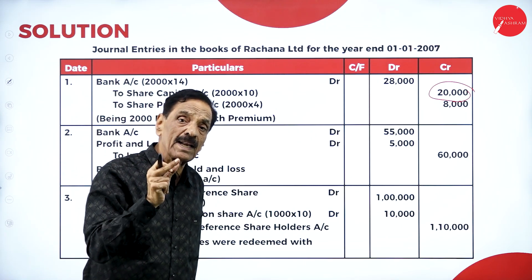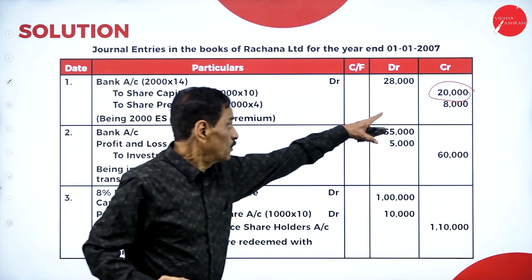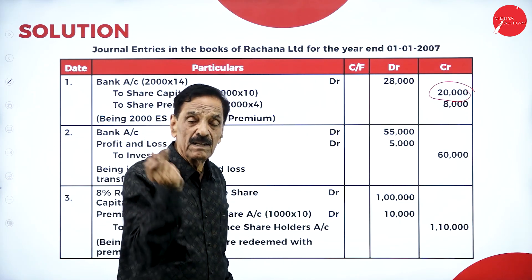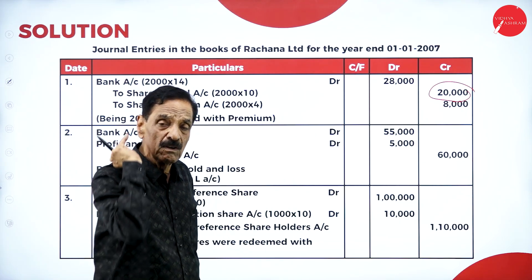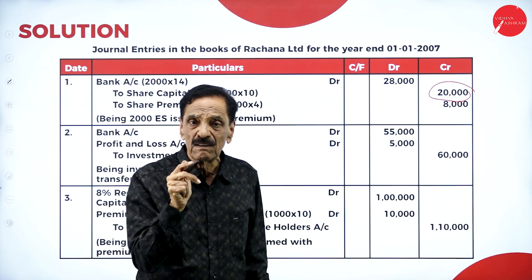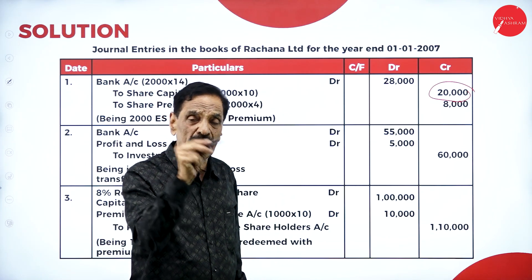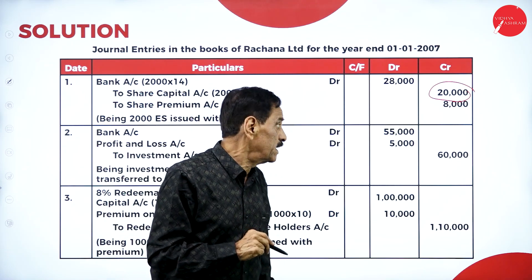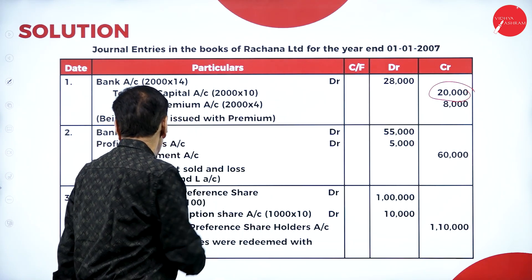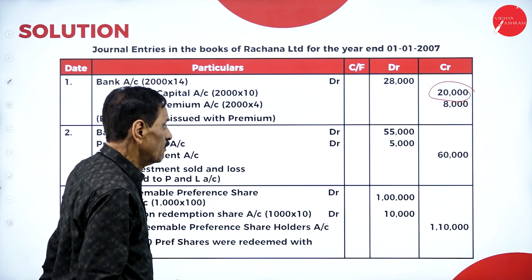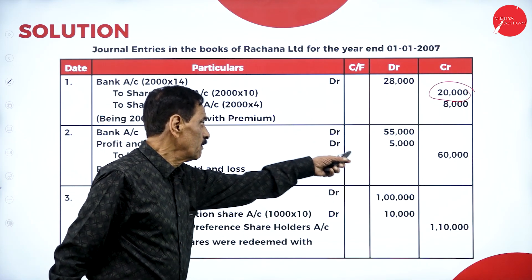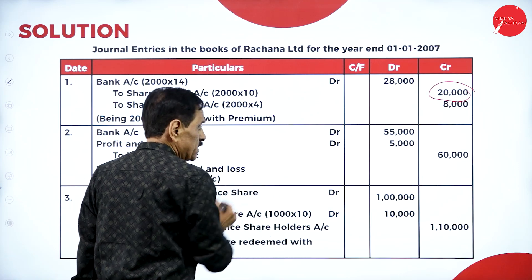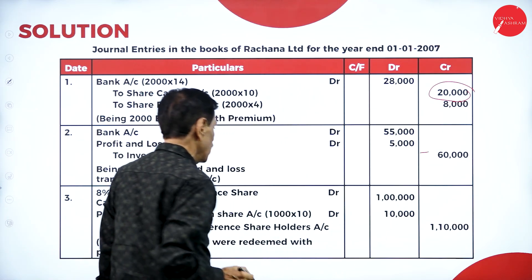For one lakh rupees face value, you have already received twenty thousand from the fresh issue. There is a shortage of eighty thousand. You have to create a Capital Redemption Reserve (CRR) with the help of General Reserve and Profit & Loss Account to the extent of eighty thousand. Also, the investments were sold for fifty-five thousand: Bank Account Dr., Profit & Loss Account Dr. to Investment Account.